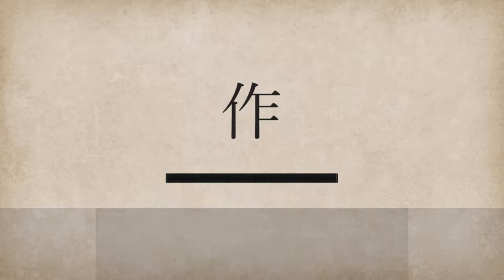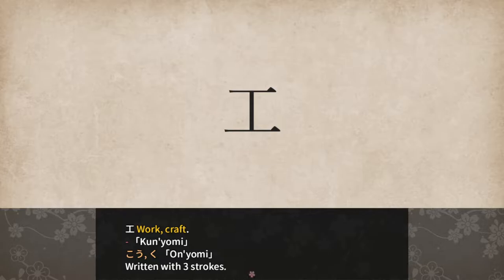Kou. Work or craft. No kunyomi and ko or ku for onyomi, written with 3 strokes. The shape of kou looks like a work desk and you can imagine a chair next to it.